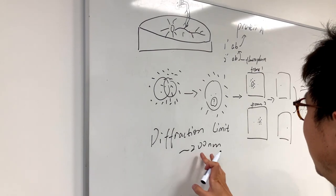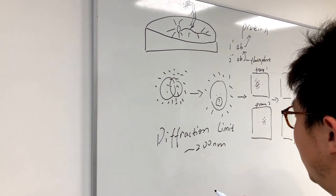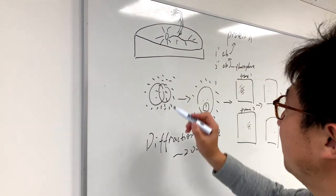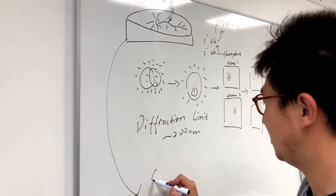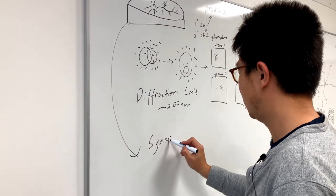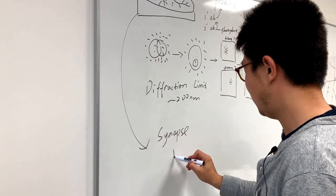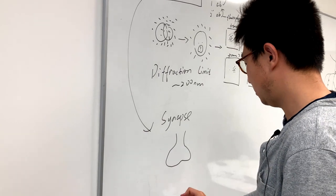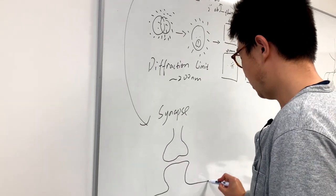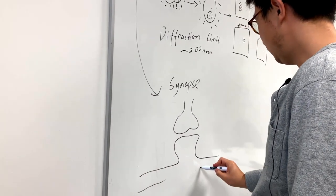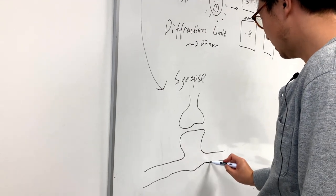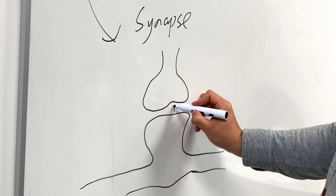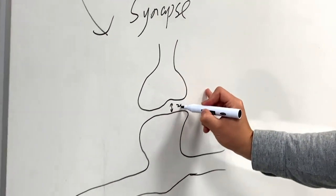The reason why we want to go beyond 200 nanometer resolution is, when you look at these neurons, they have these types of structures called synapses. These are the biological structures that are responsible for information transfer and storage in these neurons. Now, this is a synapse, for example.